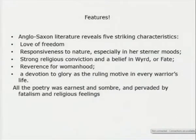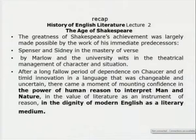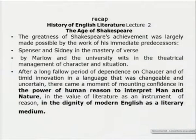In Anglo-Saxon literature we have seen that there was a love of freedom, the love of liberty, reverence for womanhood, and most of the poems or literature was alliterative, with a ruling motive in every warrior's life being devotion to glory. In lecture 2 we had the age of Chaucer, the first major father of English poetry, even the English novel and the English short story. When we come to the age of Shakespeare, where Shakespeare as a person, dramatist, and poet dominates the entire age, his achievement was largely made possible by the work of his immediate predecessors like Spenser and Sidney in the mastery of verse, and Marlowe and the university wits especially in drama.